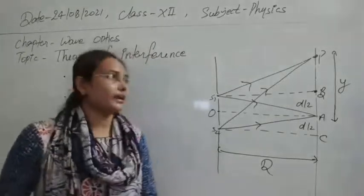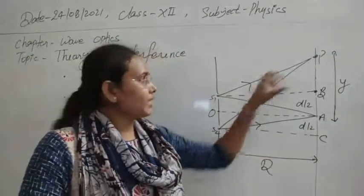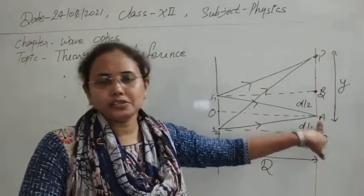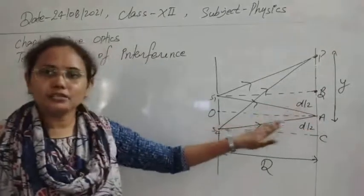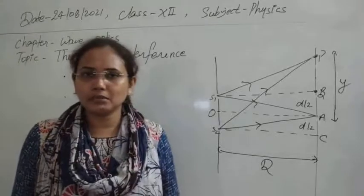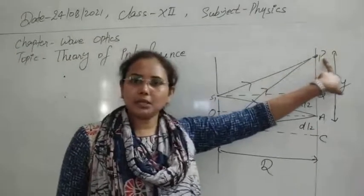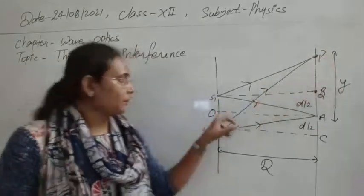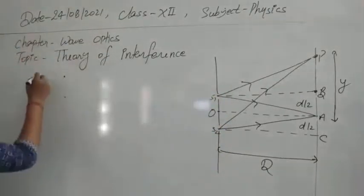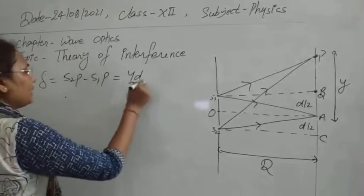In the theory of interference, we first had to find out the path difference between the two waves reaching point P. Point A is already of maximum intensity, so constructive interference always occurs there since delta equals zero. For path difference zero, we always obtain maximum intensity. But point P will be maximum or minimum according to the conditions of path difference. The path difference between two waves is S2P minus S1P, which we calculated to be equal to YD upon capital D.